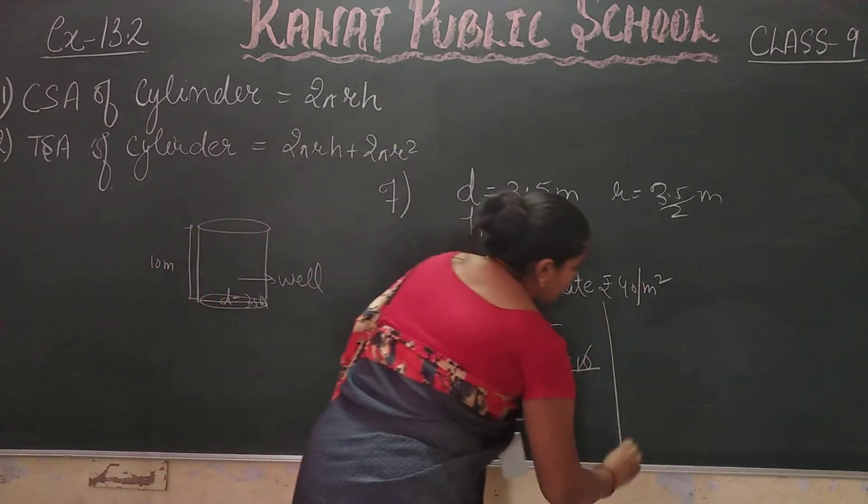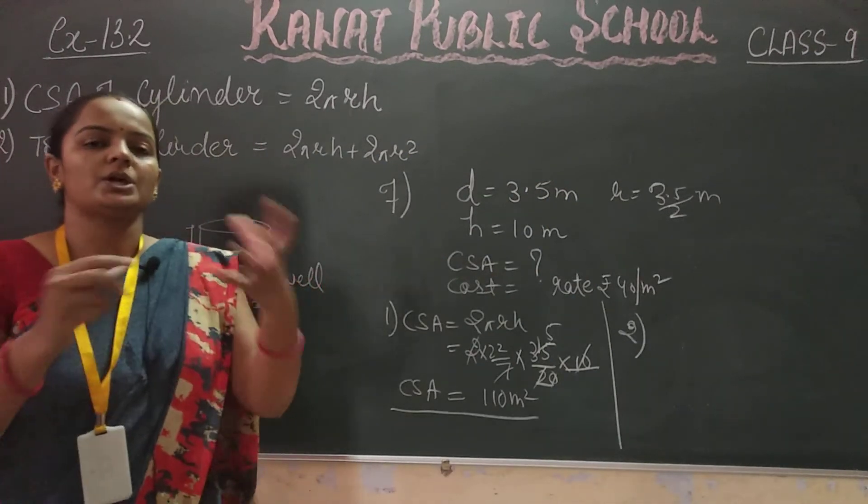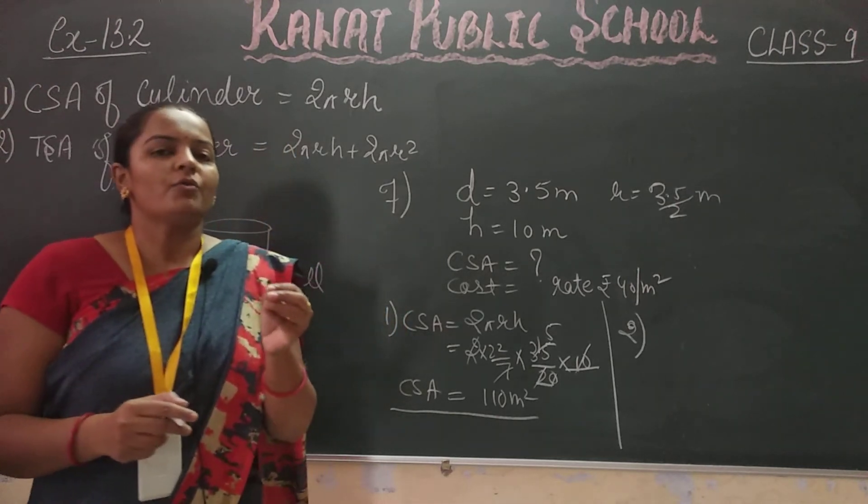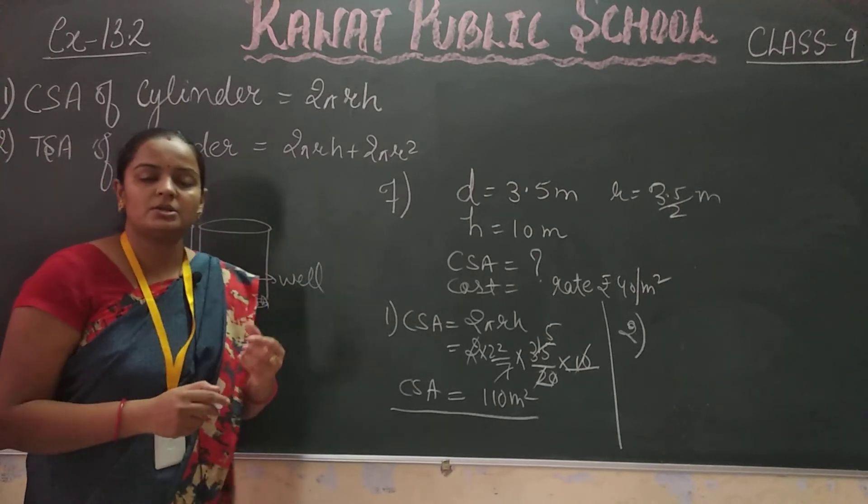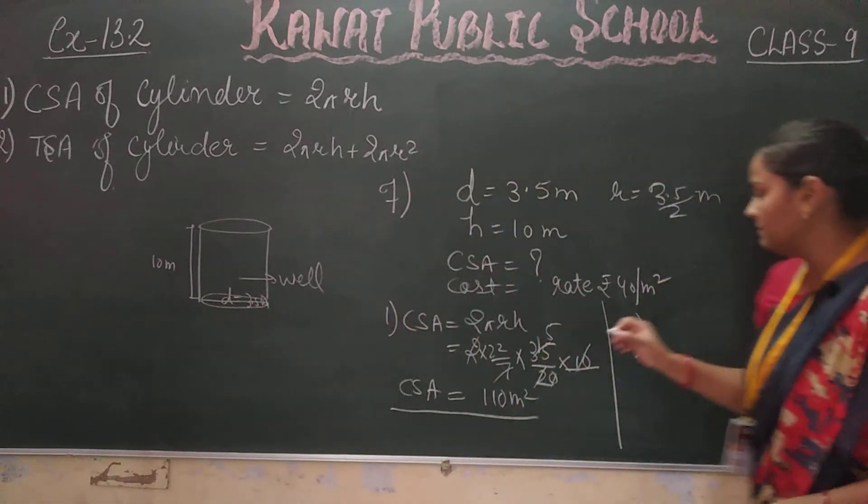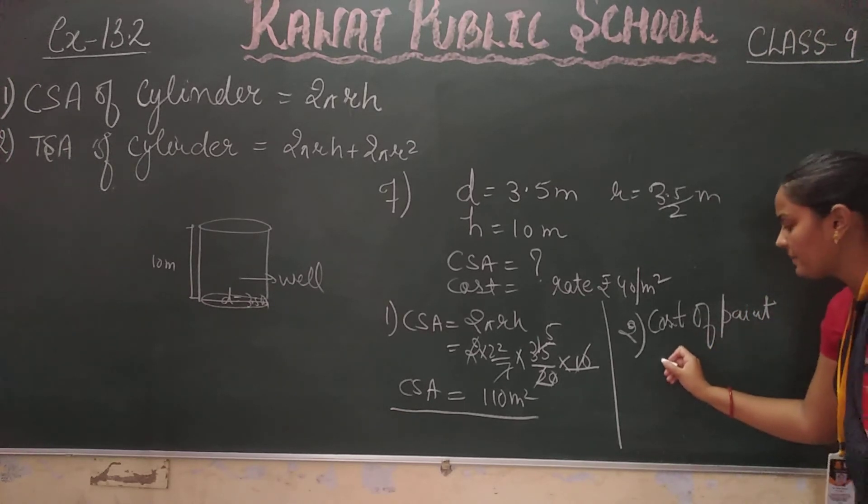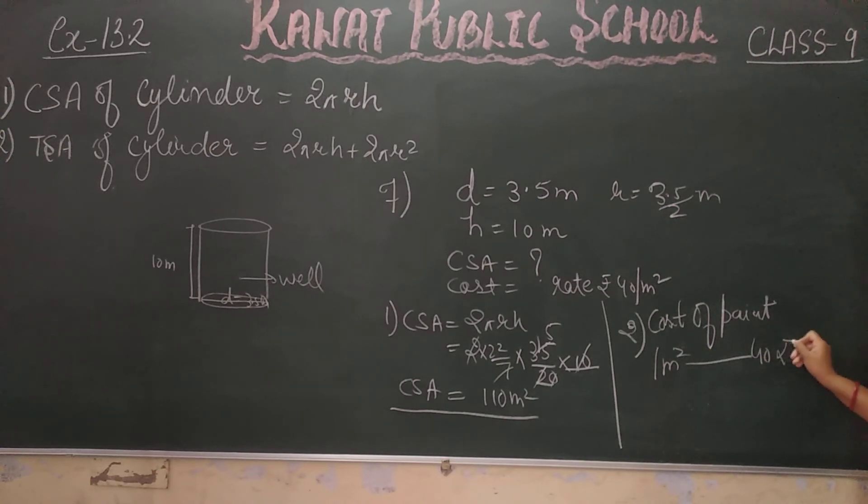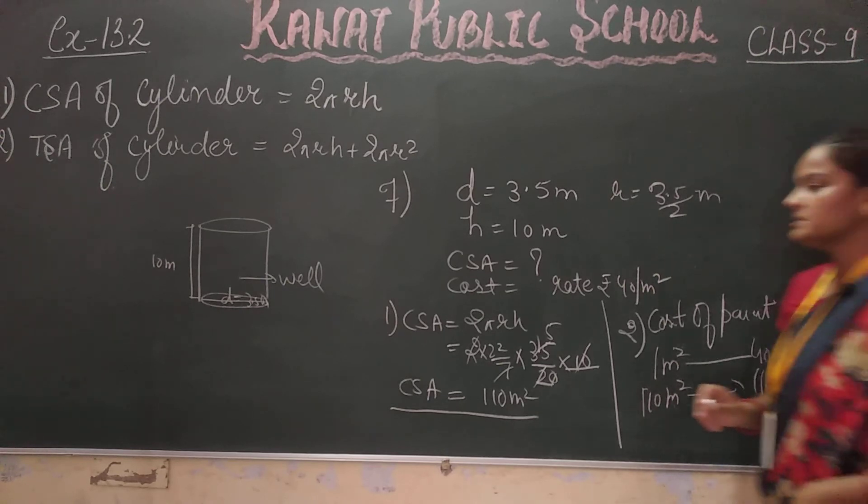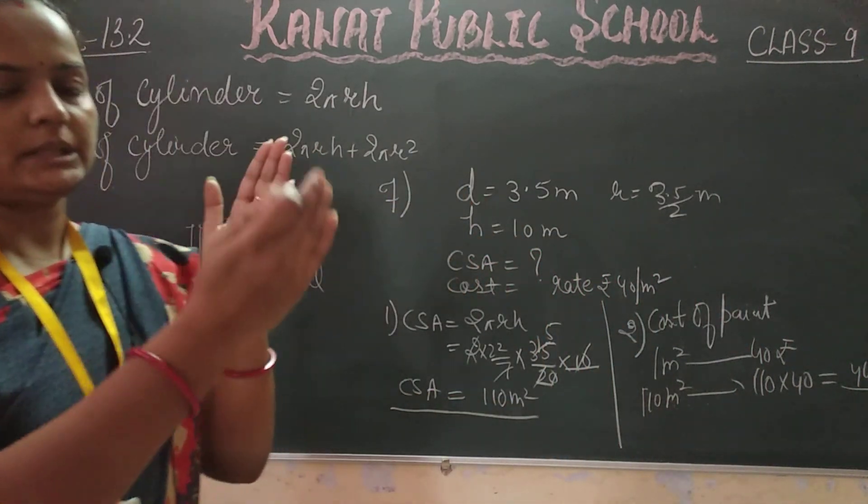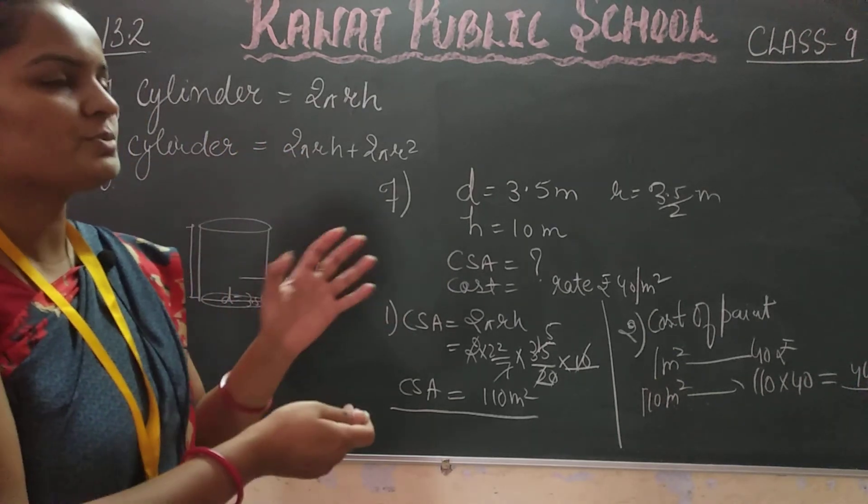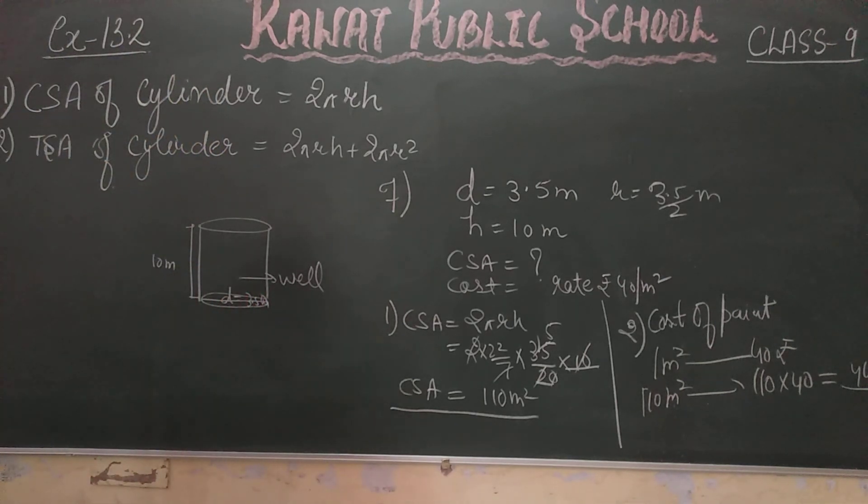Now we need to find the cost of paint. Cost of paint is given as 40 rupees per 1 meter square. So for 110 meters square, we simply multiply. Cost of paint equals 110 times 40, which equals 4400 rupees. This is the answer to this question.